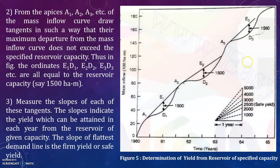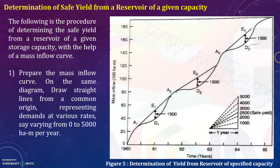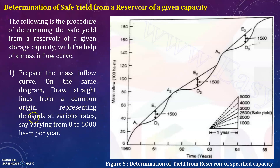The following is the procedure for determining the safe yield from a reservoir of a given storage capacity with the help of a mass inflow curve. First, you have to draw the mass inflow curve, then prepare it on the same diagram with straight lines from the common origin representing the demands at various rates, ranging from 0 to 5000 hectare meter per year.